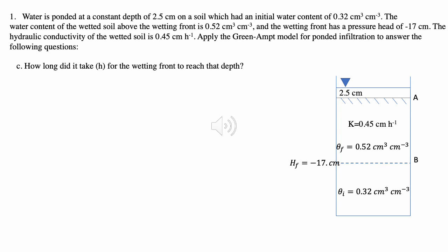The last part of the question asks how long it took for the wetting front to reach that depth. The equation we'll use is: T equals delta theta over K, times parentheses LF minus, in a set of parentheses, H_not minus H_f, times the natural log of 1 plus LF over (H_not minus H_f), close parentheses.